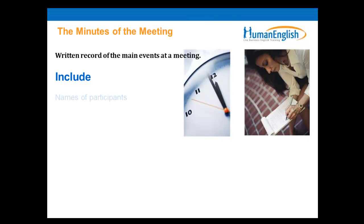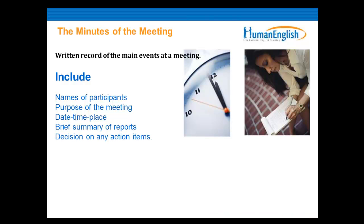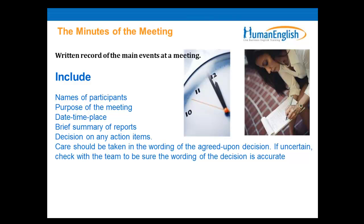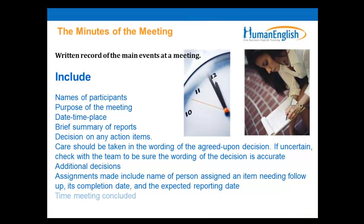What do minutes include? The names of participants, the purpose of the meeting, the date, time, and place, a brief summary of reports, decisions on any action items — and care should be taken in the wording of the agreed-upon decision. Additional decisions and assignments should include the name of the person assigned an item. Meeting follow-up includes the completion date and the expected reporting date. The time the meeting is concluded and the date of the next meeting if known. It's quite formal and it's always a written record of what happened.